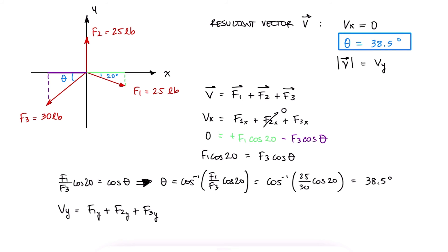The y component of forces f1 and f3 will use the trig function sine and have a negative value, since they are pointing downwards. Substituting the variables, we find the magnitude of the resulting vector v. This means that the magnitude of vector v is a positive 2.23 pounds.